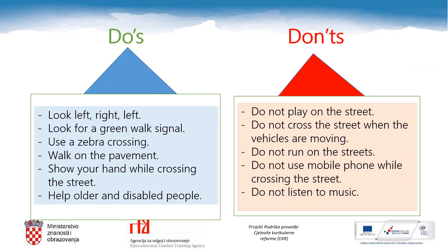Alright, now let's see. How many do's have you got? This is what you do in traffic to stay safe: look left, right, left; look for the green walk signal; use a zebra crossing; walk on the pavement; show your hand while crossing the street; help older and disabled people. And this is what you don't do in traffic: do not play on the street; do not cross when vehicles are moving; do not run on the streets; do not use mobile phones while crossing; and do not listen to music. Pavement or sidewalk means pločnik — sidewalk is used in North American English, pavement in British English.